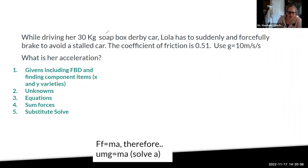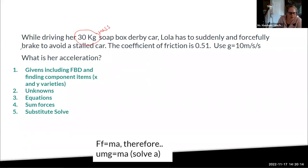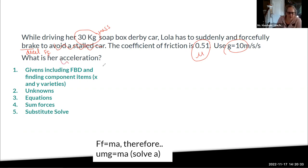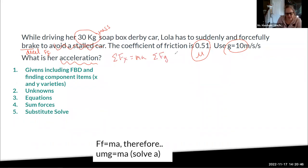Lola is driving her 30-kilogram soapbox car and had to suddenly and forcefully brake. So we are going to have a deceleration, and that's going to be from the force of friction. The coefficient of friction, mu, is 0.51, and this time use 10 for gravity. What is her acceleration? This problem did not give me any information about velocity, so to find acceleration I'm going to sum the forces in the X direction and sum the forces in the Y direction. Probably one of those directions is going to drop out — let's draw the free body diagram to see which one.